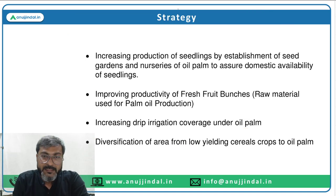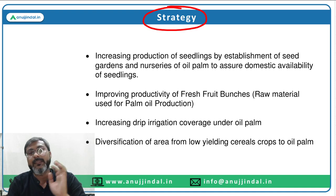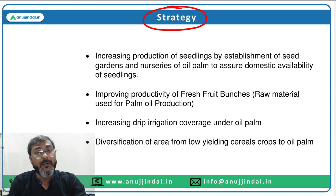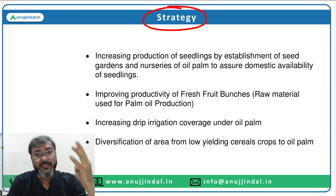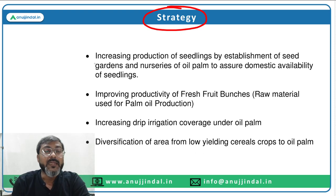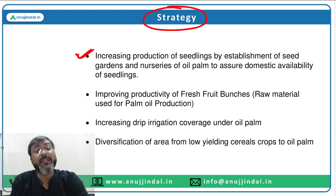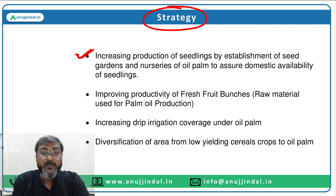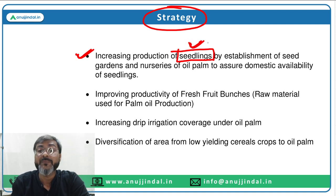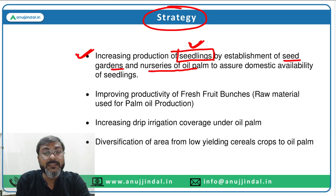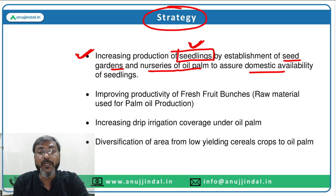Moving ahead to the strategy. The government wants to increase the production of edible oil, and there must be some strategy behind that. This strategy is discussed in four points. Number one: the government wants to increase the production of seedlings, which will be done by establishment of seed gardens and nurseries of oil palm to ensure domestic availability of seedlings.